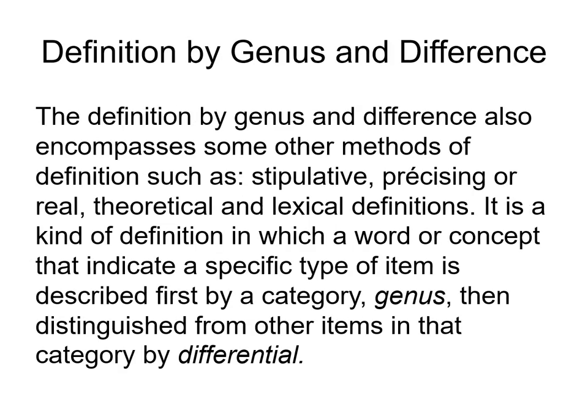The definition by genus and difference also encompasses some other methods of definition, such as stipulative, precising, real theoretical, and lexical definitions. It is a kind of definition in which a word or concept that indicates a specific type of item is described first by a category — genus — then distinguished from other items in that category by differential.